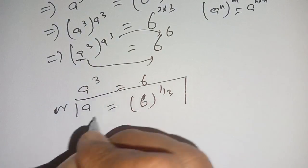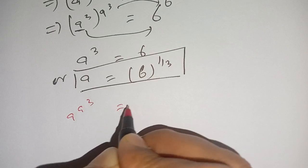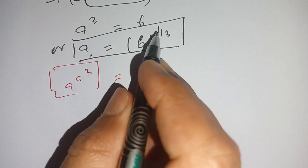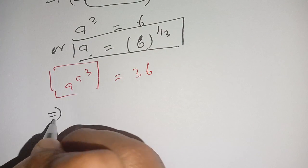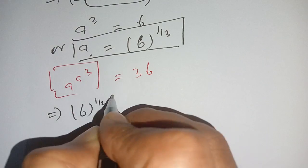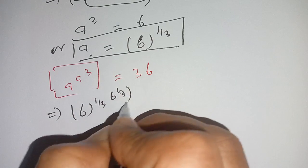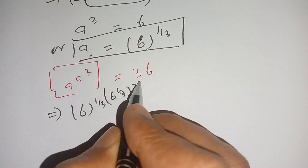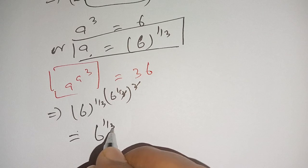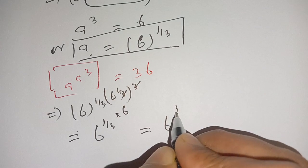Now let us verify this solution. The given equation is a power a power 3 is equal to 36. Substituting a is equal to 6 power 1 divided by 3 on the left hand side, we put 6 power 1 divided by 3 in place of a, and in the exponent we put 6 power 1 divided by 3 whole power 3. This 3 and this 3 cancel out, giving us 6 power 1 divided by 3 times 6.